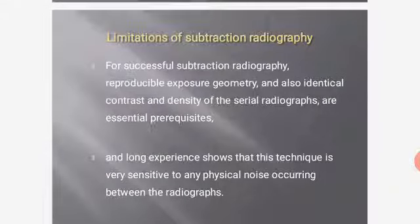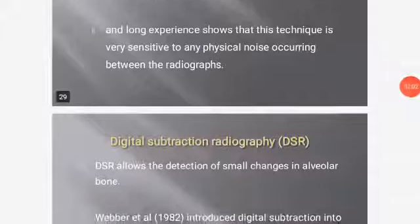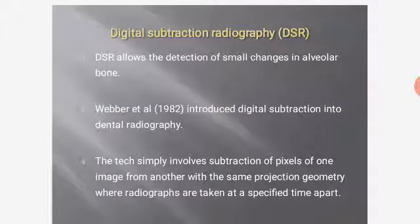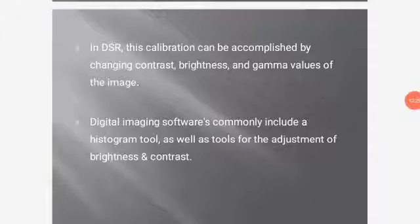Limitations of subtraction radiography: reproducible exposure geometry and identical contrast and density of serial radiographs are essential prerequisites. Experience shows this technique is very sensitive to any physical noise occurring between the radiographs. Digital Subtraction Radiography (DSR) allows detection of small changes in alveolar bone. Weber et al. in 1982 introduced digital subtraction into dental radiography. The technique involves subtraction of pixels of one image from another with the same projection geometry, taken at a specified time apart. In DSR, calibration can be accomplished by changing contrast, brightness, and gamma values, and software tools include histogram adjustment of brightness and contrast.